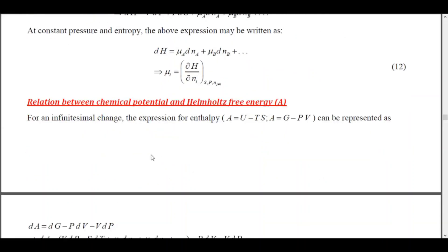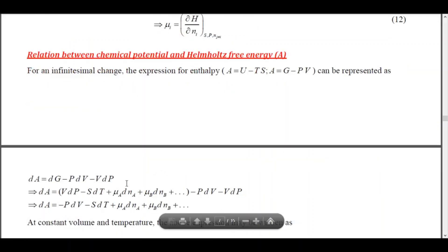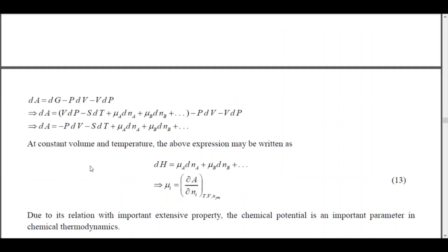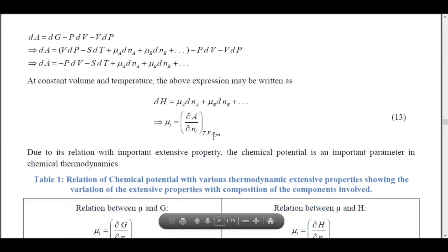Now we go to the relation between chemical potential and Helmholtz free energy. Helmholtz free energy is defined as A = U - TS, which can be rearranged to A = G - PV. For an infinitesimal change, I pull up the expression for dG and substitute. The VdP terms cancel out. At constant temperature and constant volume, the remaining terms vanish, and we get μ_i = (∂A/∂n_i) at constant T, V, and all other moles.